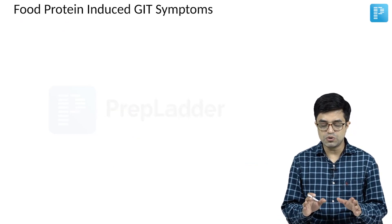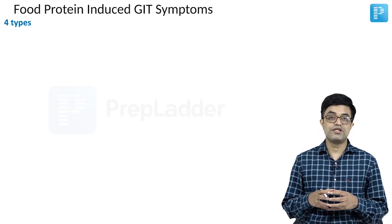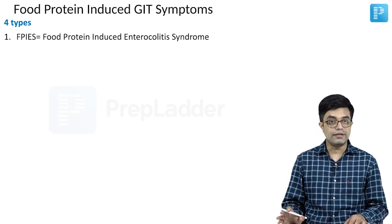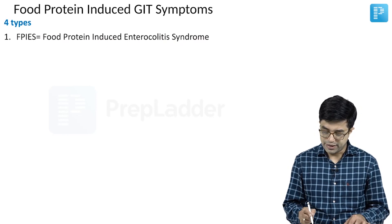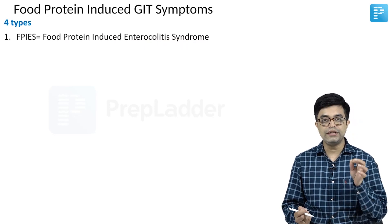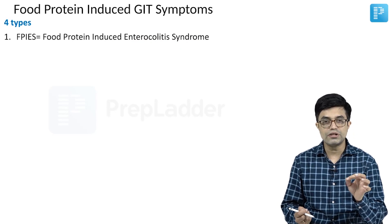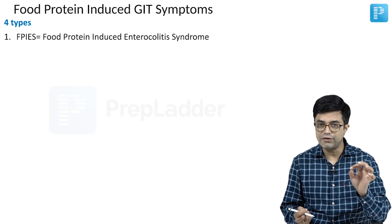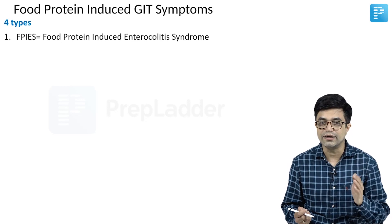First is food protein induced GI symptoms. There are four subtypes. The first category is FPIES, which stands for Food Protein Induced Enterocolitis Syndrome. It is enterocolitis, so there will be inflammation of both the small intestine and large intestine. Inflammation of the small intestine will lead to features like vomiting, abdominal distension, malabsorption and failure to thrive, while inflammation of the colon will lead to diarrhoea in these patients.